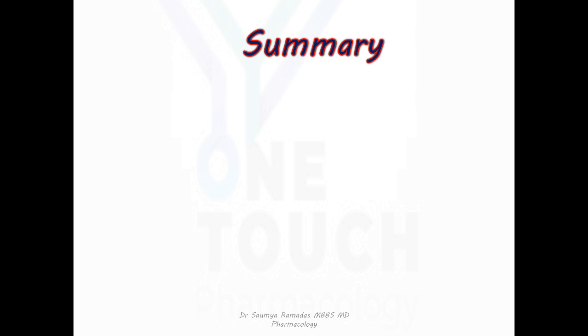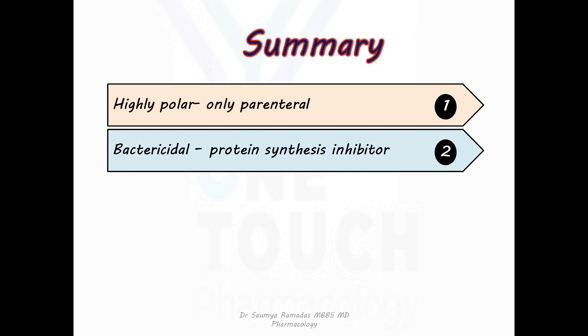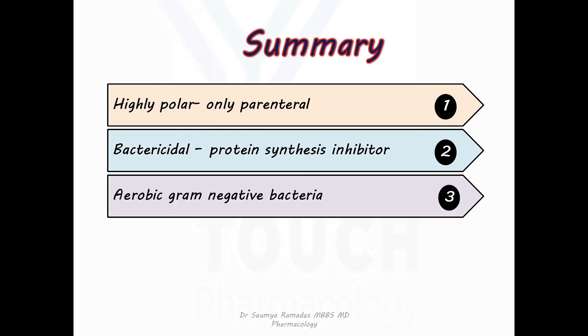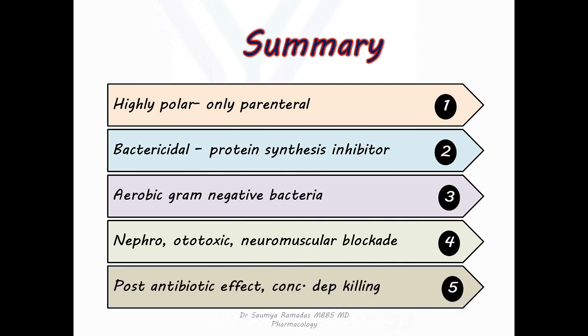To summarize, these are the 5 points I would like you to remember about aminoglycosides. These drugs are highly polar and hence given only parenterally. They are bactericidal and protein synthesis inhibitors. They are mainly active against aerobic gram-negative bacteria. They cause nephrotoxicity, ototoxicity, and neuromuscular blockade. They have the property of post-antibiotic effect and concentration-dependent killing.